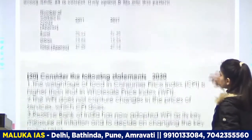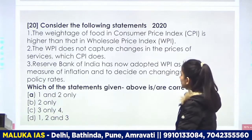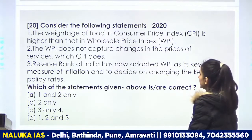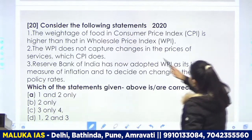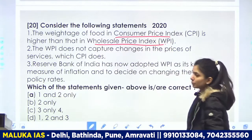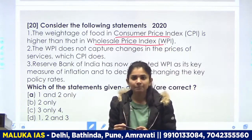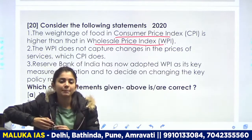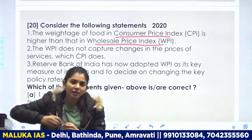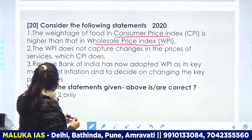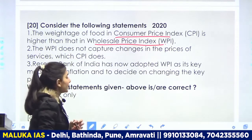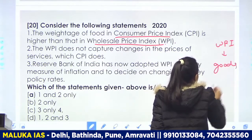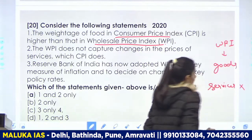Next question: the weight of food in consumer price index is higher than that in wholesale price index. Sabse pehle hume pata hona chahiye — CPI and WPI kya hain. Yeh inflation ko measure karne ka ek tarika hai. RBI pehle WPI ke basis par analyze karta tha, but now RBI has shifted to CPI combined — consumer price index combined ki taraf shift ho gaya hai.